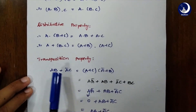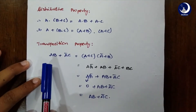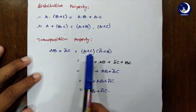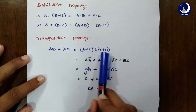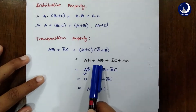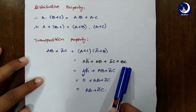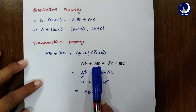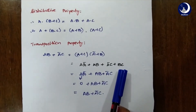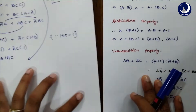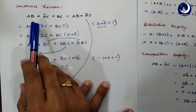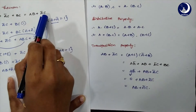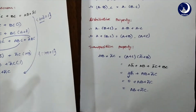Now let's look at the transposition property: AB + ĀC = (A+C)·(Ā+B). To verify these two are equal, expand the right side: A·Ā + AB + ĀC + BC. Now A·Ā=0, so we are left with AB + ĀC + BC. But from our consensus theorem, AB + ĀC + BC = AB + ĀC, which is exactly the left side. So these are equal — those are the properties of Boolean algebra.